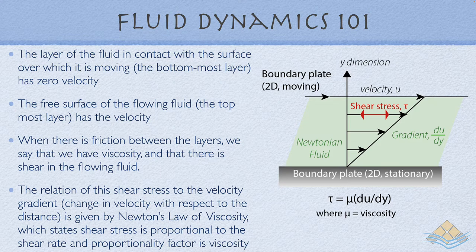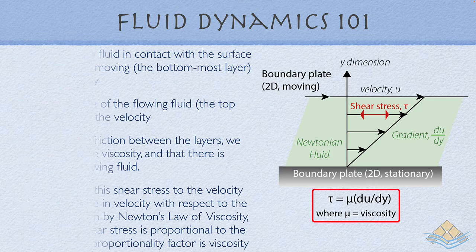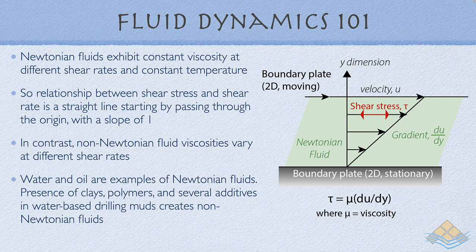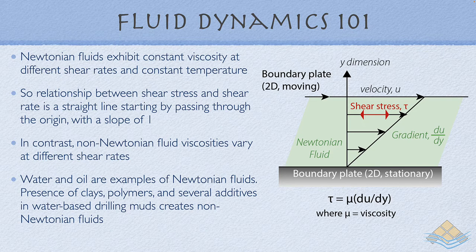Shear stress is related to the change in velocity with respect to distance. Newton's law of viscosity states that shear stress is proportional to the shear rate, and the proportionality factor is viscosity. In a Newtonian fluid undergoing laminar flow, viscosity is constant at different shear rates and temperatures, and the relationship between shear stress and shear rate is a straight line through the origin with a slope of one. In contrast, non-Newtonian fluids vary their viscosity at different shear rates — which is relevant to salt, because at geological time scales salt acts like a fluid.